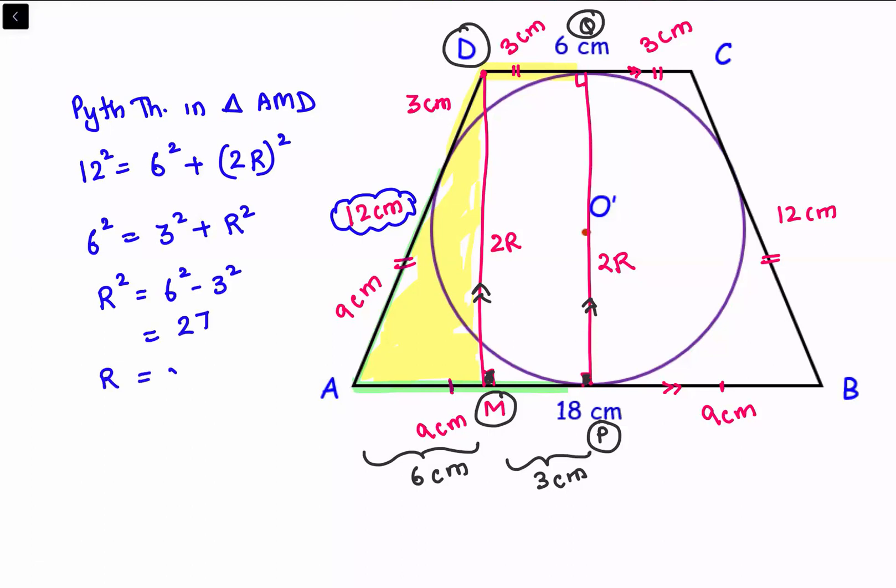And R is square root of 27 which is 3 root 3 centimeter. And that's our answer.